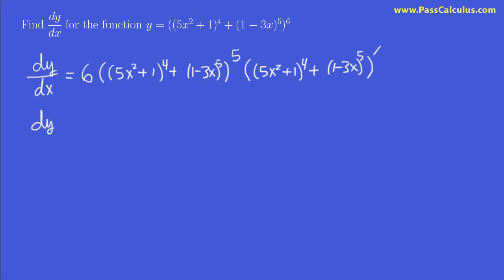5x squared plus 1 to the 4 plus 1 minus 3x to the 5th. All right, so now this part is done, so unfortunately we just got to quickly recopie it. And let's do the derivative of this part.